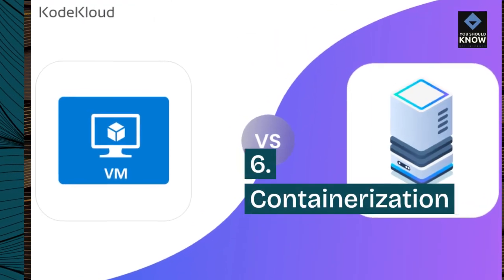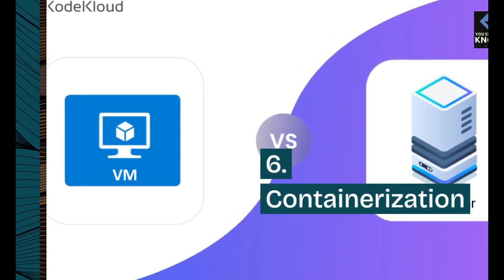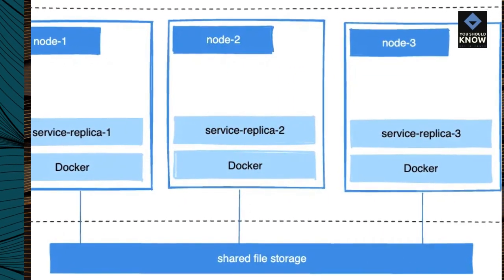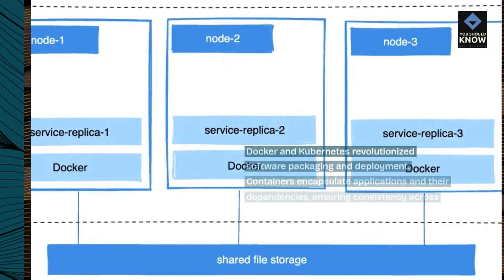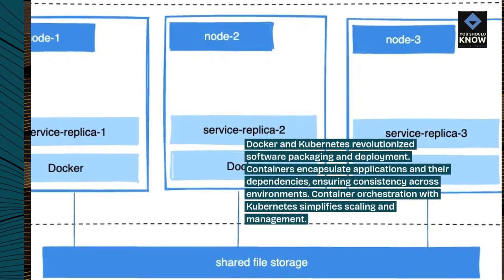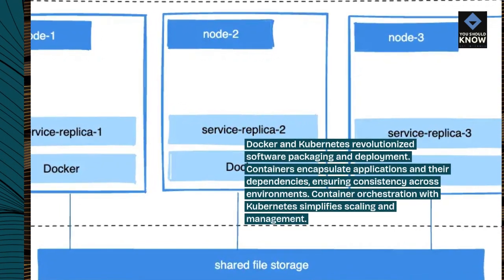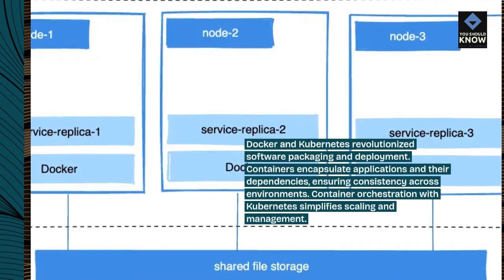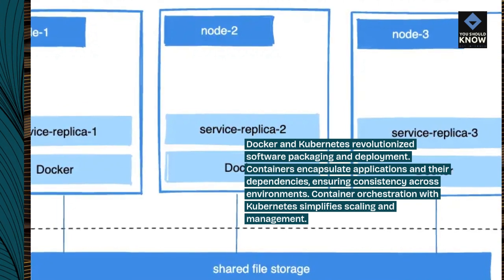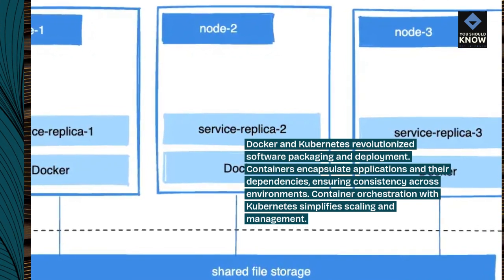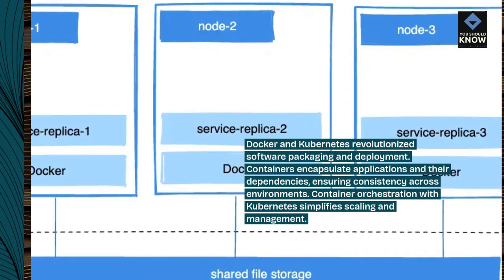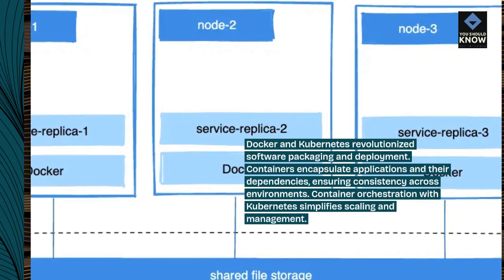6. Containerization. Docker and Kubernetes revolutionized software packaging and deployment. Containers encapsulate applications and their dependencies, ensuring consistency across environments. Container orchestration with Kubernetes simplifies scaling and management.